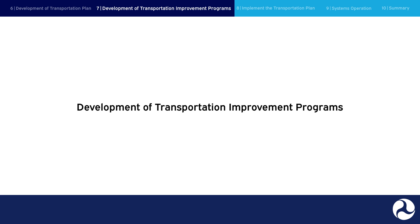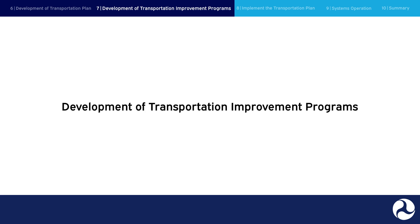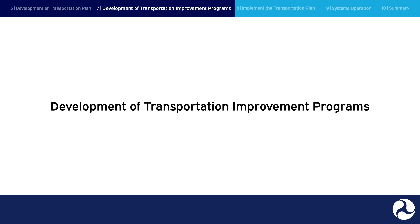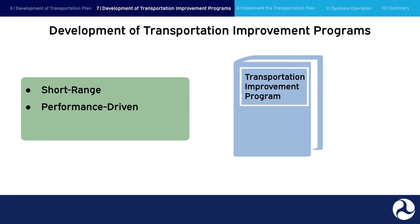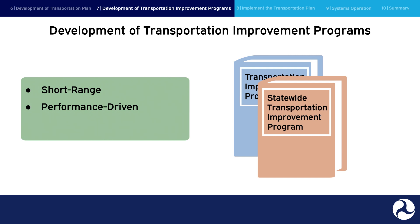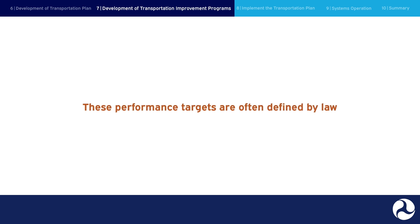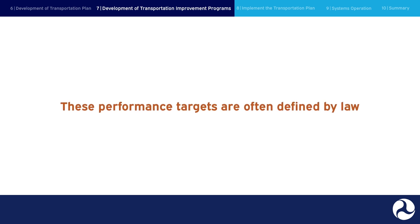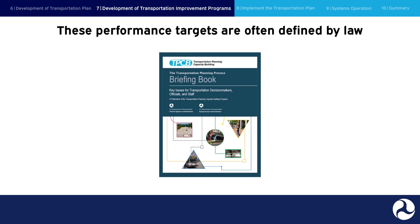Development of Transportation Improvement Programs. From the longer-term, larger-scale transportation plan developed in the previous step, a short-range, performance-driven transportation improvement program is developed that includes priority transportation improvements. The TIP implements the long-range transportation plan. Programs include funding for projects over a four-year period. The TIP, at the MPO level, or STIP, at the statewide level, represents immediate priority actions to achieve the area's goals and associated system performance targets. These performance targets are often defined by law and by their own regulations. For additional information about these laws and the relationship between TIP and STIP, please refer to the Transportation Planning Capacity Building Briefing Book.